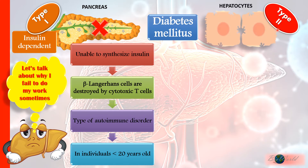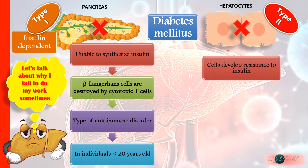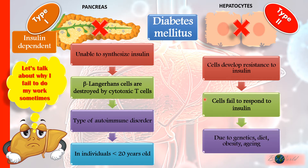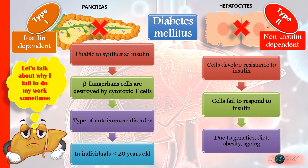Type 2, on the other hand, is related to the hepatocytes. The hepatocytes have developed resistance to insulin, meaning they no longer respond to the insulin hormone. This could happen because genetically a person is born with hepatocytes that have fewer receptors for insulin, or it could be due to overuse — diets rich in carbohydrates or obesity may cause the hepatocytes to become less sensitive. Aging can also cause receptors to be lost from the hepatocytes. Since this has nothing to do with insulin levels, type 2 diabetes mellitus is also known as non-insulin-dependent diabetes.